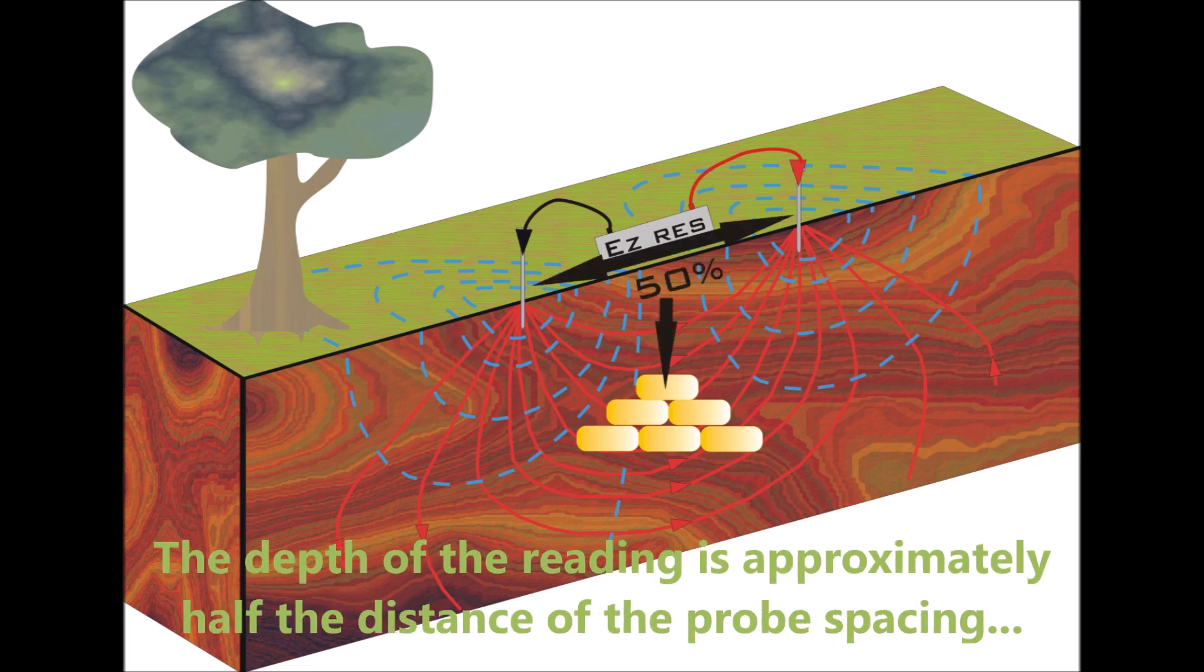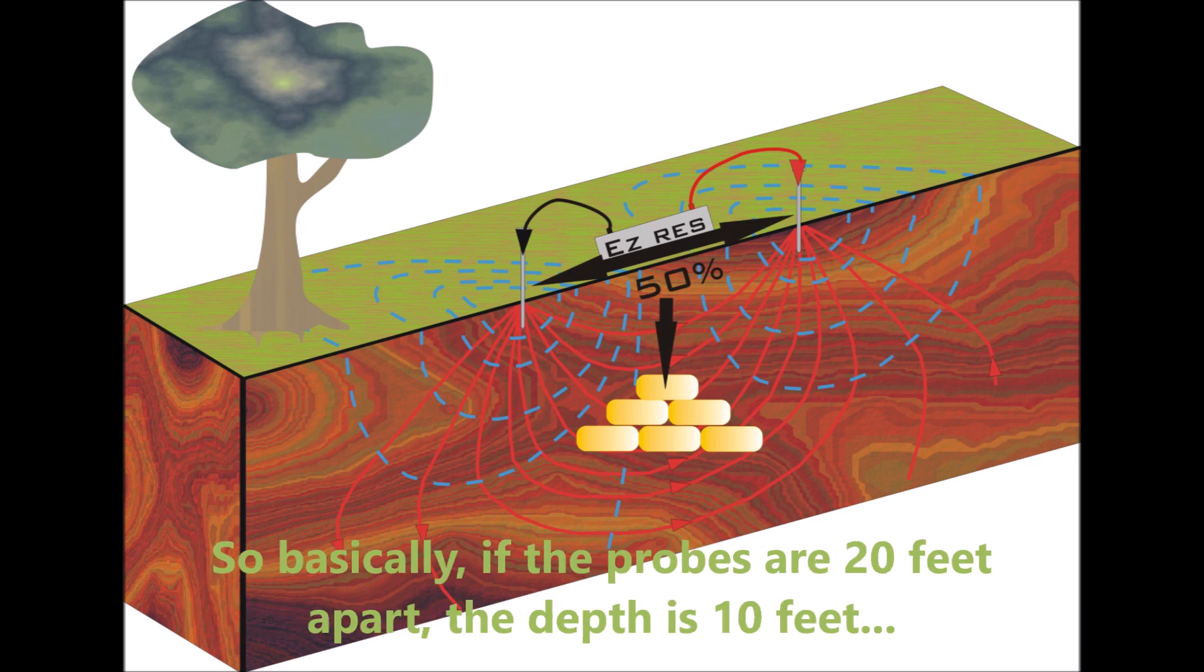The depth of the reading is approximately half the distance of the probe spacing. So basically, if the probes are 20 feet apart, the depth is 10 feet.